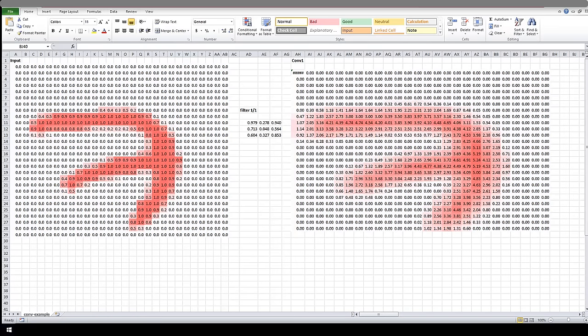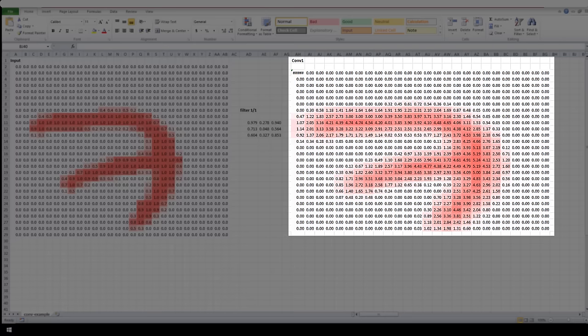So after this filter has convolved the entire input, we'll be left with a new representation of our input, which is going to be made up of the entire matrix of those stored dot products we got from the filter. This matrix of dot products is going to be the output of this layer, and is represented here. This is what will then be passed to the next layer as input. And this same process that we just went through with the filter will happen to this new output with the next layer's filters.